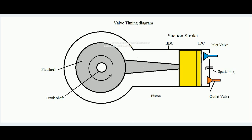Hello students, today we will learn about the valve timing diagram of an SI engine. The valve timing diagram concerns when the inlet and outlet valve of an SI engine practically opens — meaning in the real case when the SI engine runs. First of all, we will take the ideal case. This is the schematic diagram of an SI engine with a cylinder, piston, connecting rod, flywheel, crankshaft, inlet valve (blue), and outlet valve (red).